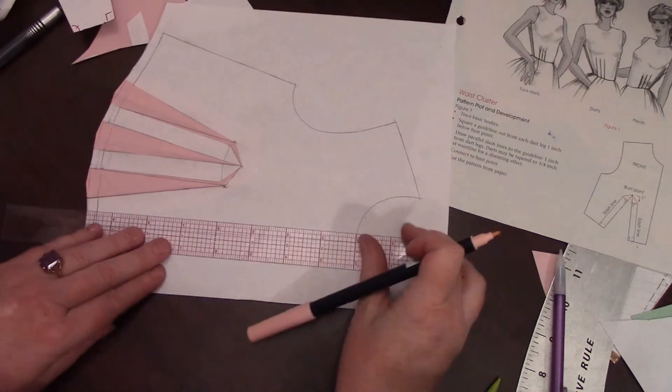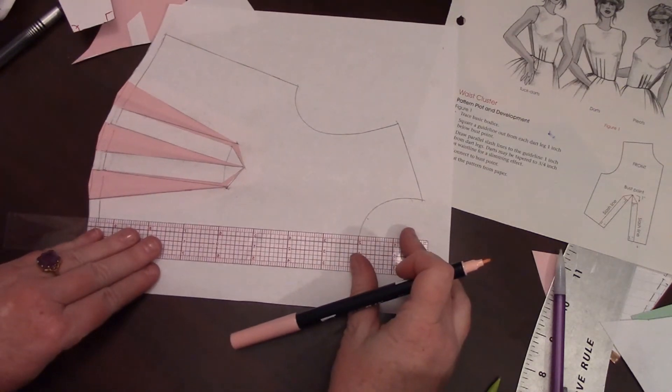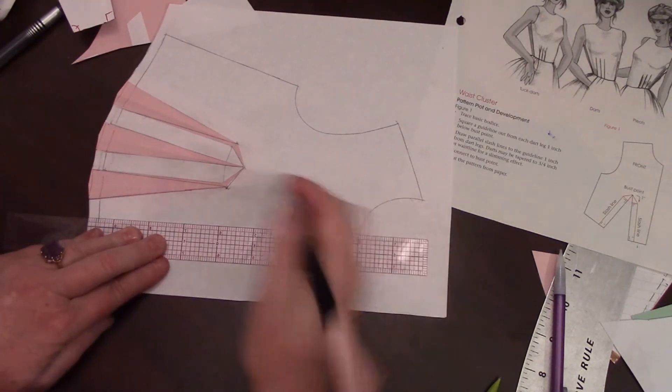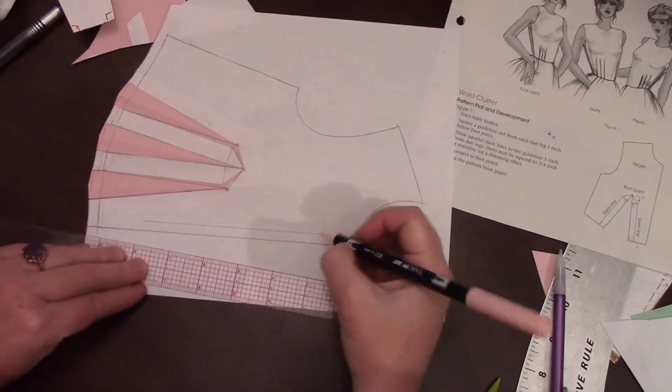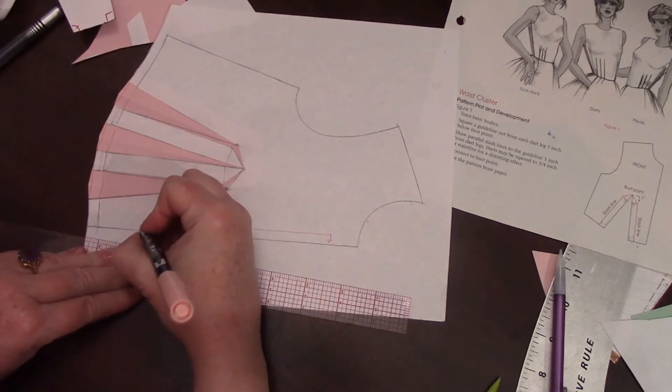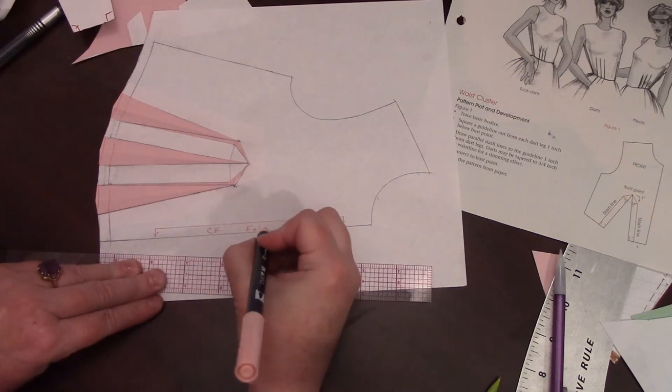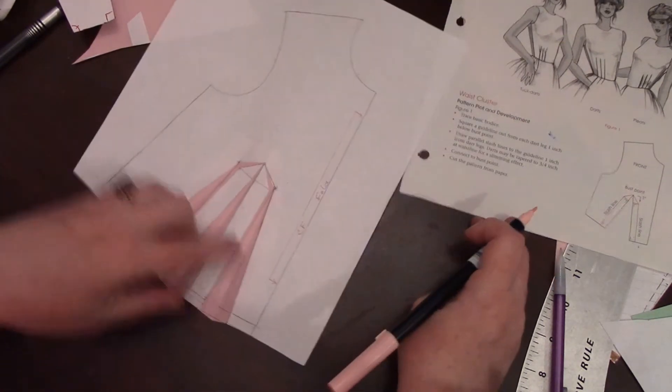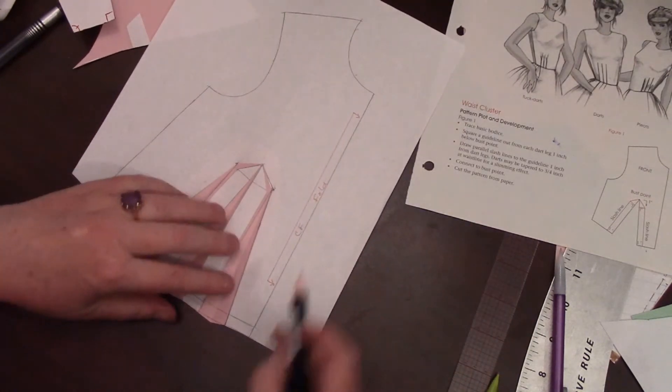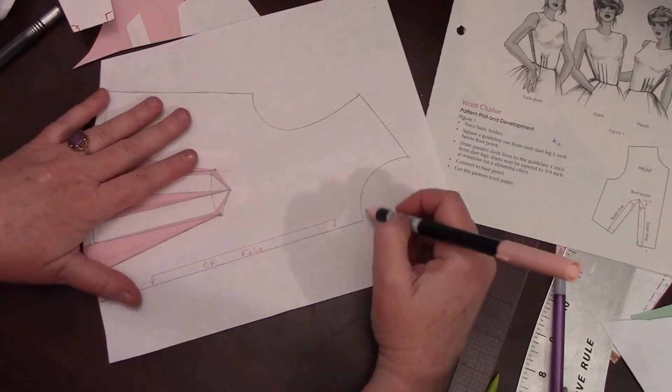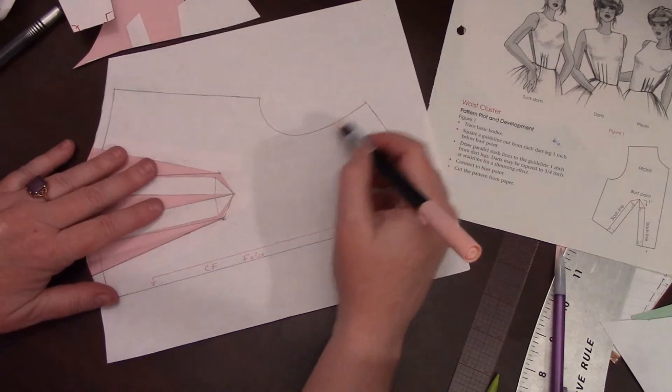And my green line is going to be here and I'm going to mark it to be cut on the fold, center front fold. So this would just be cut one. I would cut this off and then I need to add seam allowance around the rest of the piece.